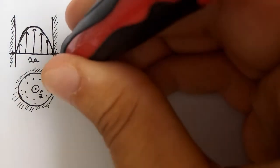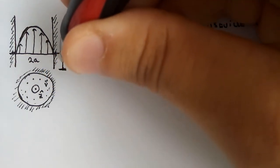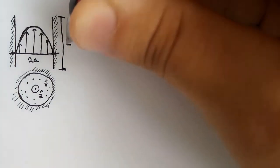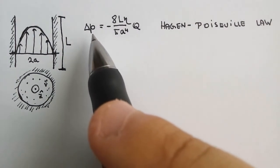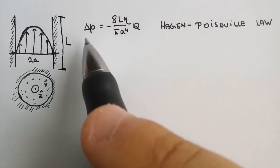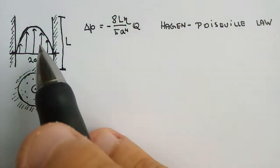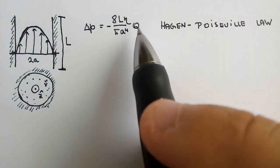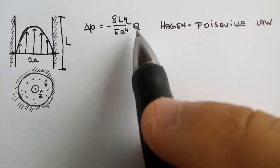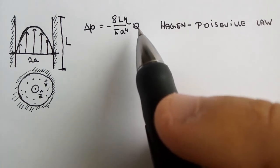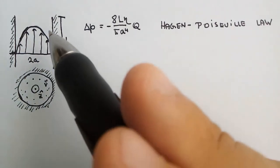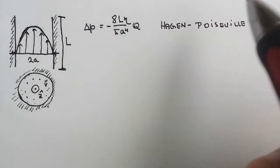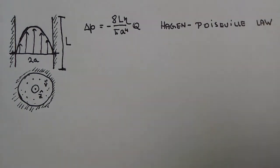The pressure difference between two points separated by a distance L generates a force. There is also Q, the volumetric flow rate, which carries the fluid along the tube. The law also involves eta, the dynamic viscosity. We shall now begin to derive it.